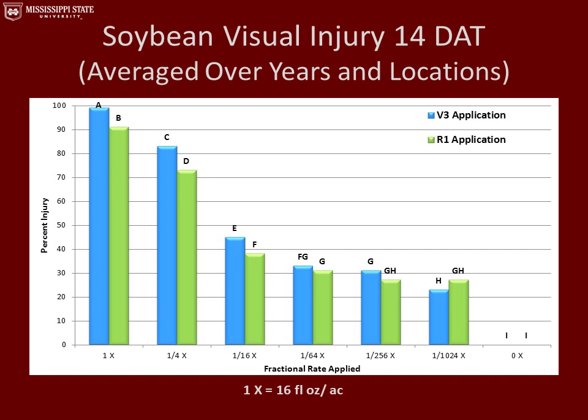This graph represents soybean visual injury 14 days after the applications were made, averaged over all years and locations. On the y-axis is percent visual injury (0 to 100), and on the x-axis is the fractional rate applied. The 1x rate was equivalent to 16 fluid ounces per acre. The blue bars represent the V3 growth stage treatments and the green bars represent the R1 growth stage treatments. With the 1x rate we had greater than 90% visual injury for both application timings, and with the lowest application rate we still saw greater than 20% visual injury.